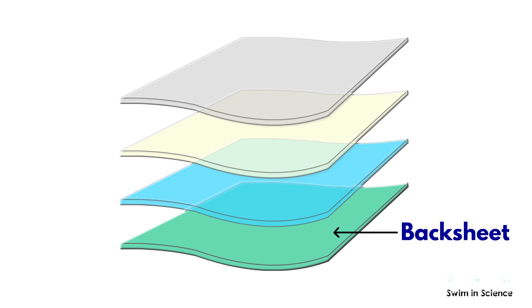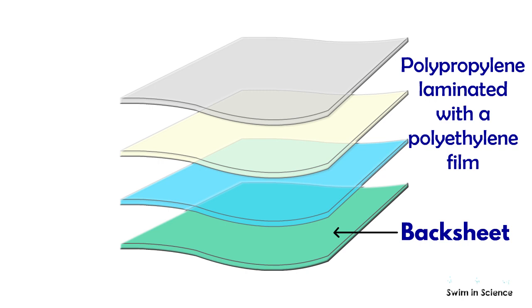The last layer is the bag sheet which is the waterproof outer layer of the diaper. This layer is typically made of soft textured cloth-like polypropylene laminated with a polyethylene film. Its function is to prevent liquid from leaking out of the diaper.